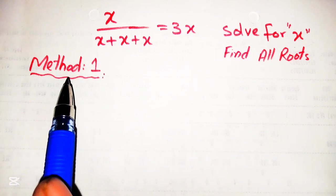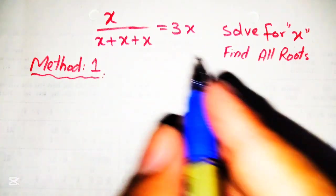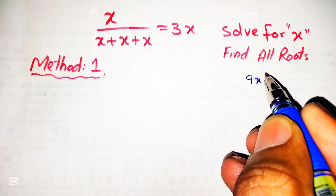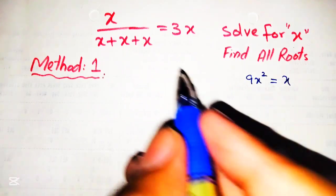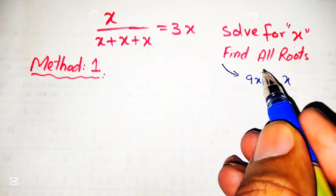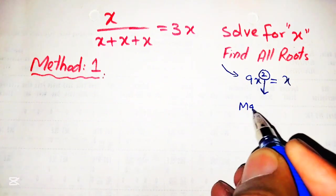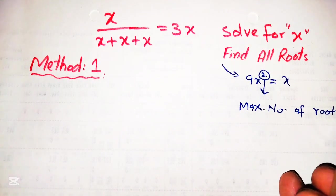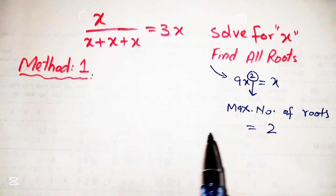We will solve this by two methods. Before solving, after simplification we can write it as 9x squared is equal to x. The degree of this equation is 2. Hence, the maximum number of roots is equal to 2. So there are two maximum number of roots of this given equation.